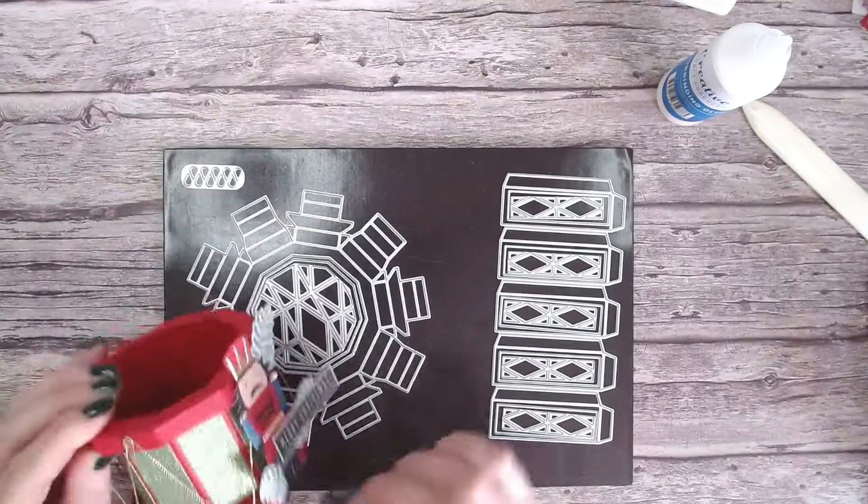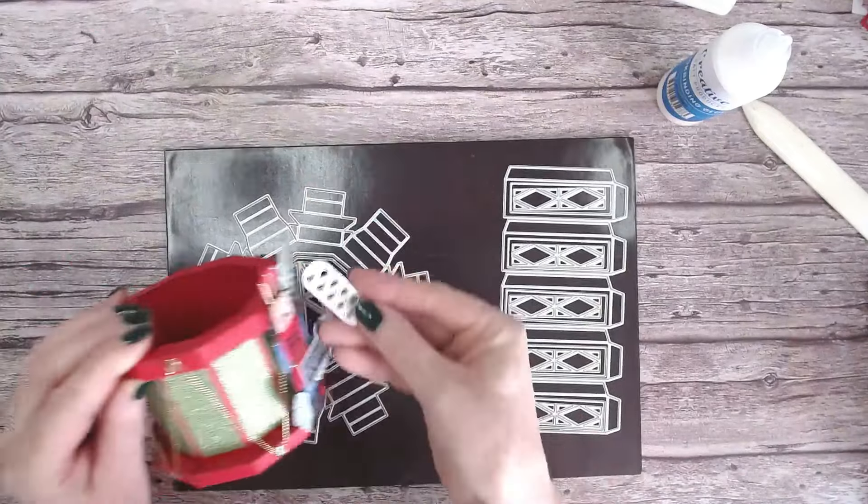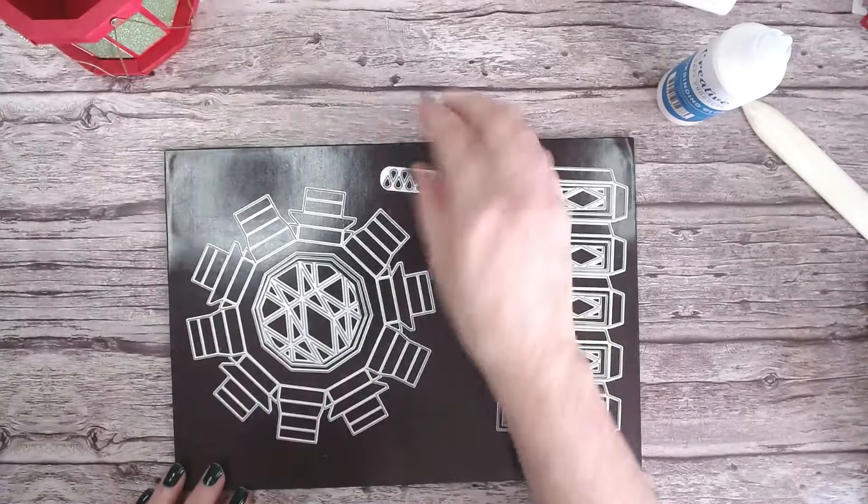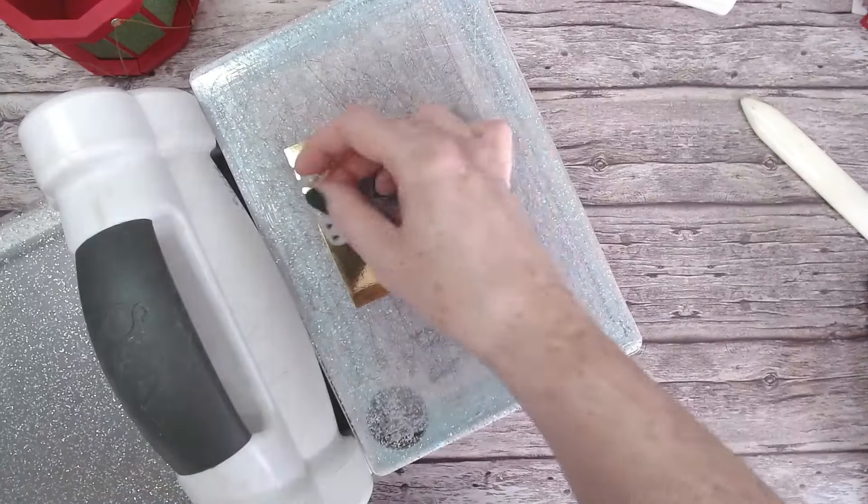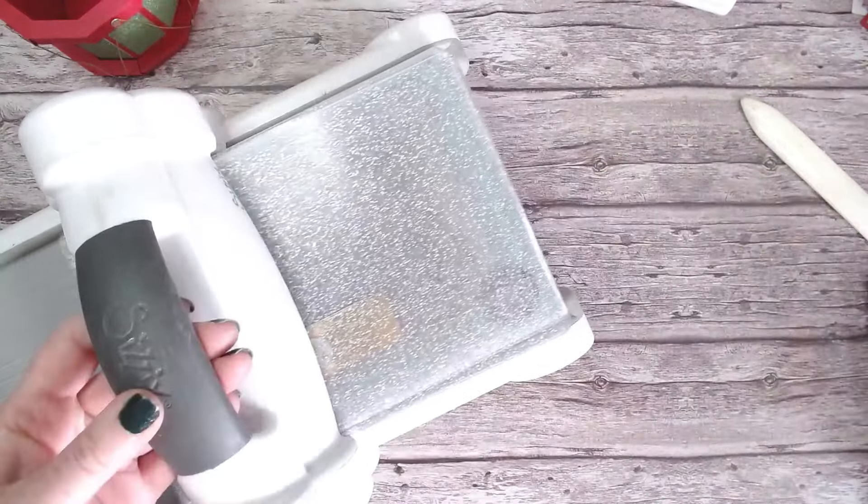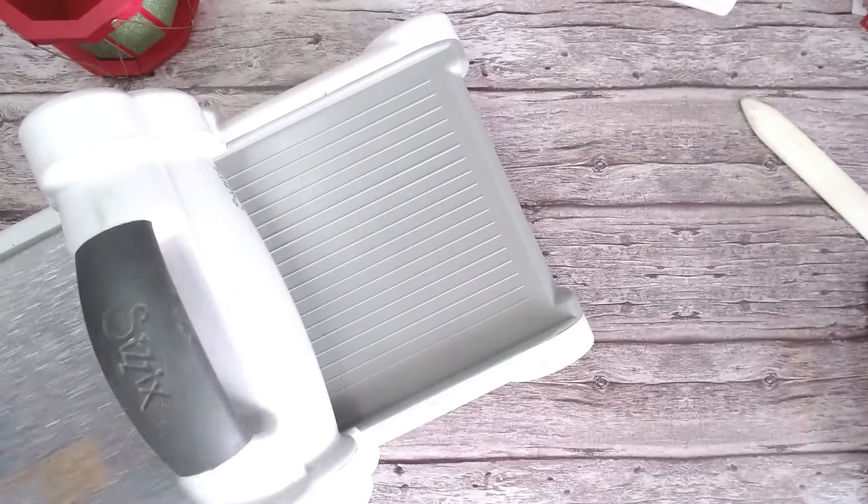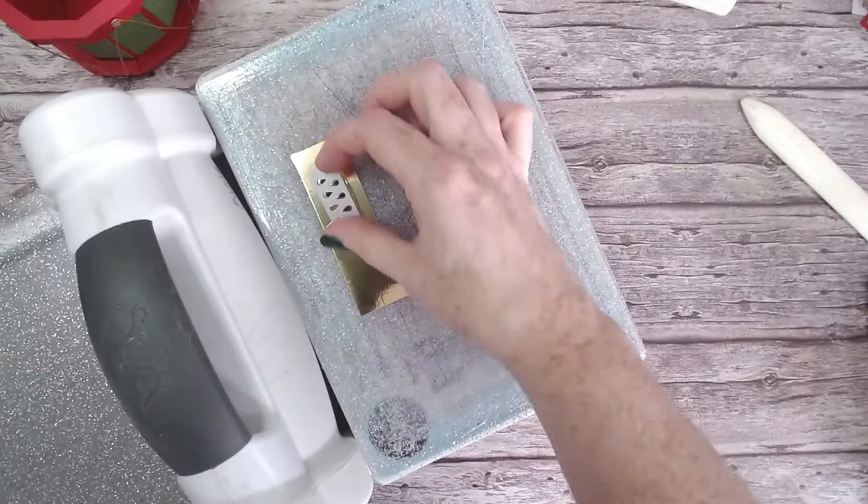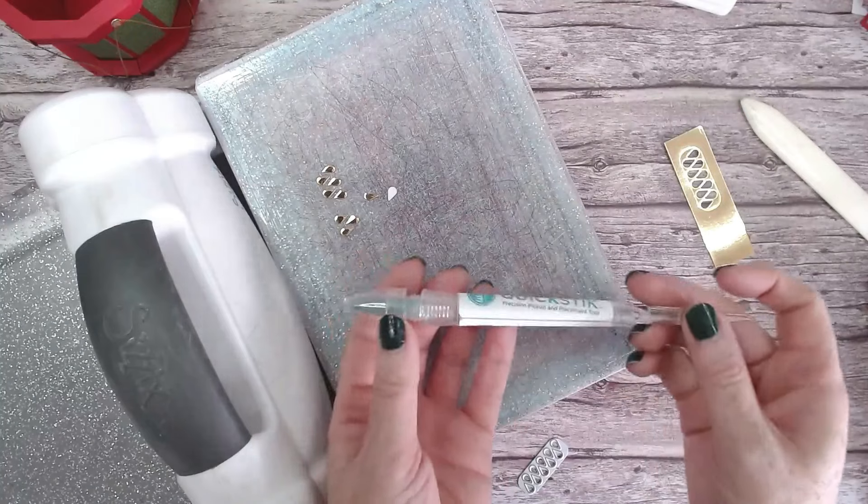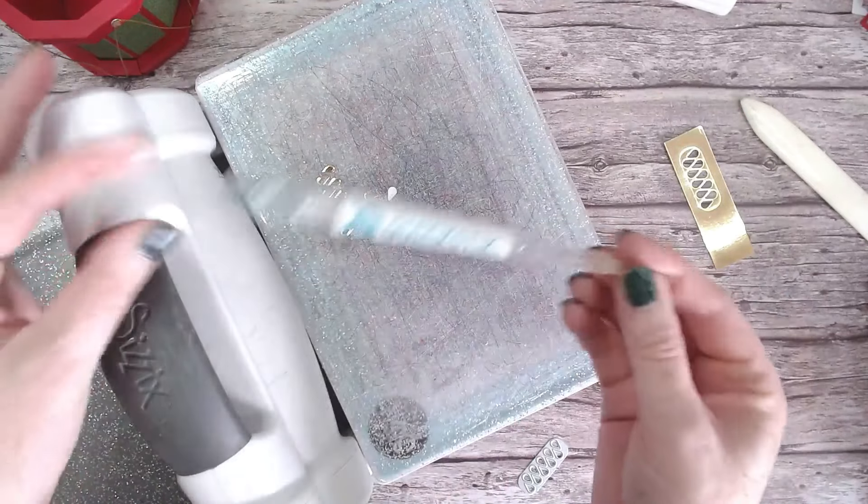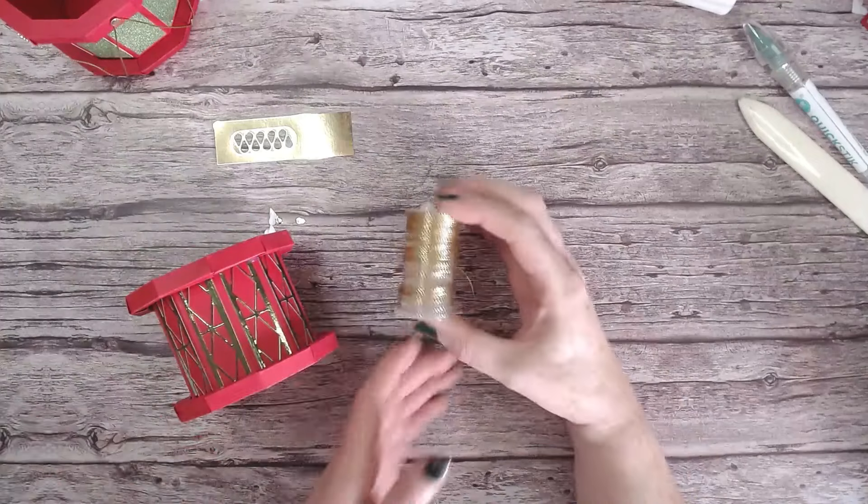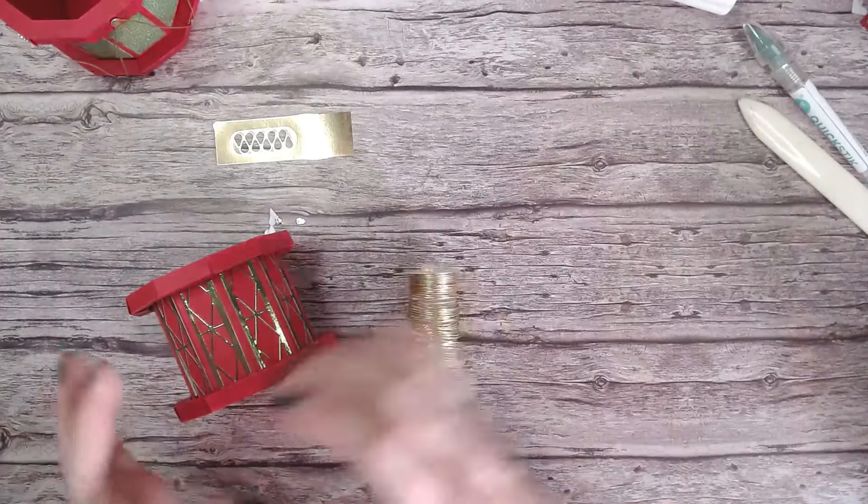Right, so now we need to add in our little teardrops here to do the strings for the drum, and I've got some gold twine for that as well. The easiest thing I can find to pick these up with is this quickie stick here. I'll see if I can find a link for that down below.